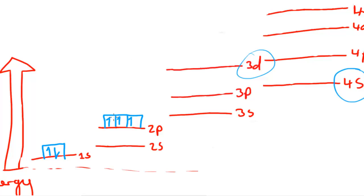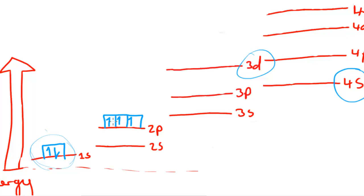Usually when an orbital is filled it has two electrons with opposite spin — spin being a quantum property of electrons. When electrons fill up, they all first have one kind of spin, represented by arrows pointing in the up direction. Then when the other electrons with the opposite spin come in, we put them in pointing down.